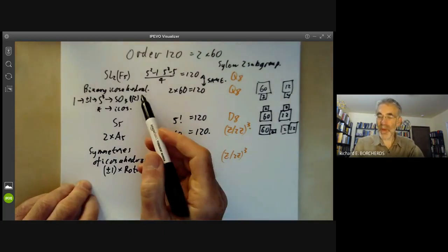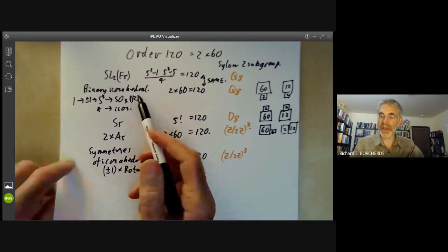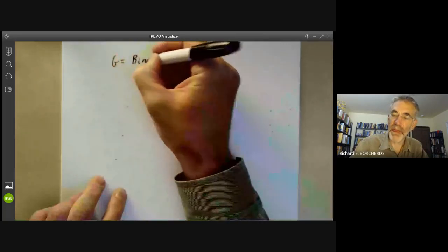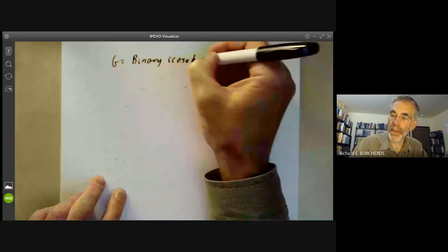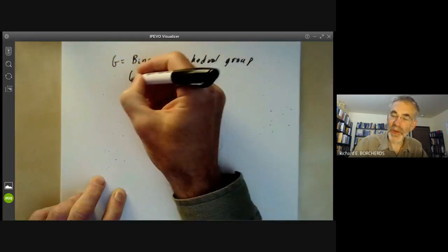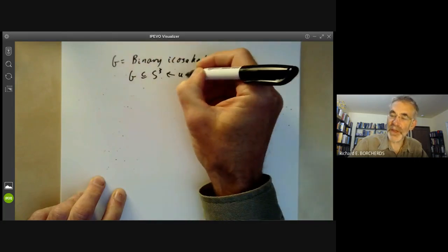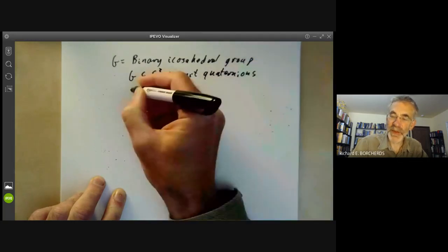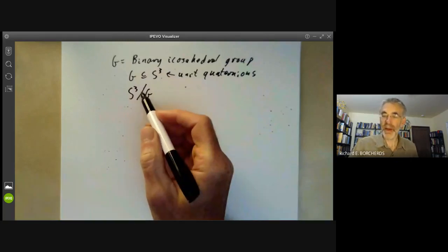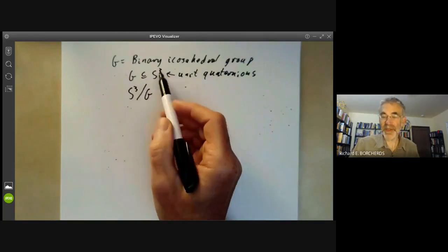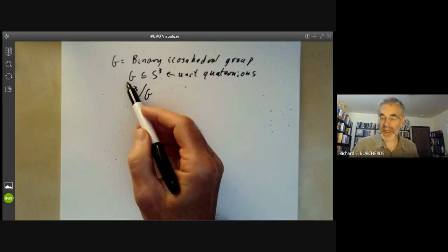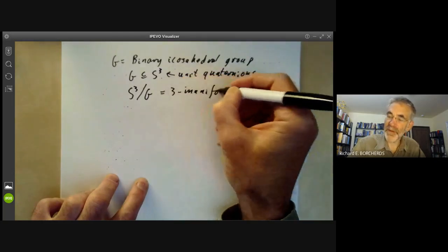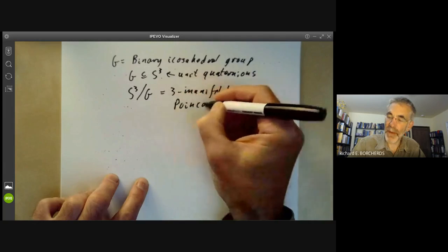There's one particular application of these groups is to take the binary icosahedral group. So let's take G to be the binary icosahedral group and we know that G is a subgroup of the group S3 of unit quaternions. So we can look at the quotient S3 modulo G and this group here is just a three manifold and this group acts fixed point freely on it. So this is a three manifold, compact one, that's a rather famous one called the Poincaré homology sphere.